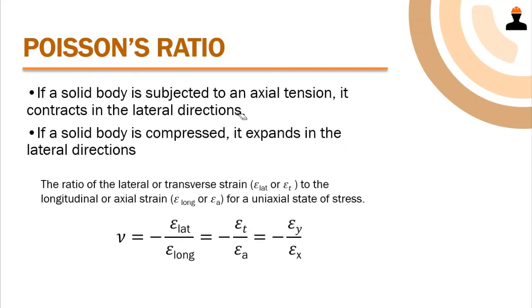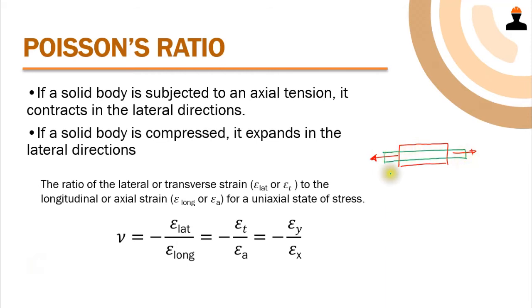We also have Poisson's ratio. If we have a material being stretched, there is an increase in length — tension along the longitudinal axis. However, the width decreases, meaning there is a contraction along the lateral axis or cross-section of the material. So there is this relationship between the lateral and the longitudinal strain.